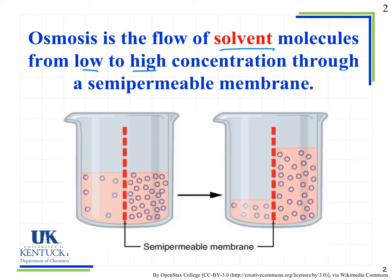What's trying to happen here is we're trying to equalize the concentration on either side of the semi-permeable membrane. On the left side we have fewer of our solute molecules, so we know this is the low concentration on the left and this is the high concentration on the right. What we see happening is that the solvent molecules are flowing from low to high.